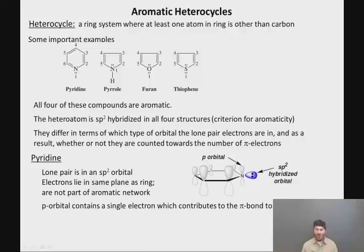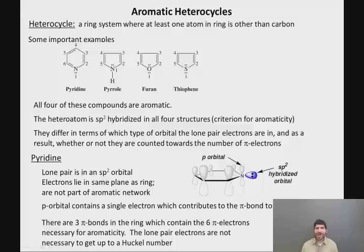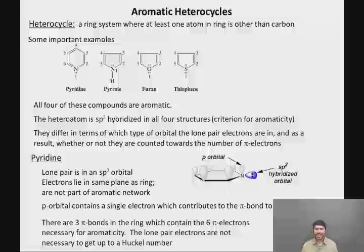In pyridine, the lone pair is in an sp2 orbital. The sp2 orbital is outside of the ring, so the electrons lie in the same plane as the ring as opposed to in an orbital that's above and below the plane of the ring, and they are not part of the aromatic network. The p orbital contains a single electron by virtue of its contribution to the carbon-nitrogen pi bond to carbon-6. That electron, as well as the electron on each of the five carbons, is going to count towards the pi electron count.